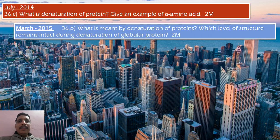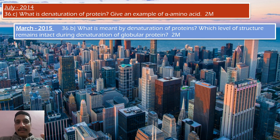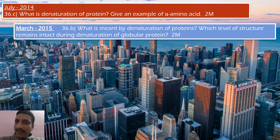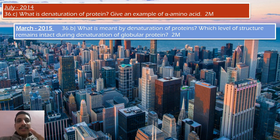March 2015 question 36B: What is meant by denaturation of protein? Same definition — one mark. Which level of structure remains intact during denaturation of globular protein? The answer is: primary structure remains intact during denaturation of protein.